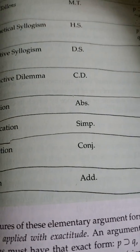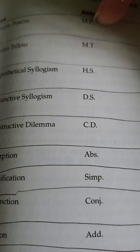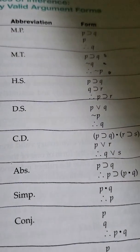These are valid argument forms, and this is what we philosophy students use to formulate our ideas. The modus ponens, for example, has an abbreviation of MP, and then it has its symbol and form.